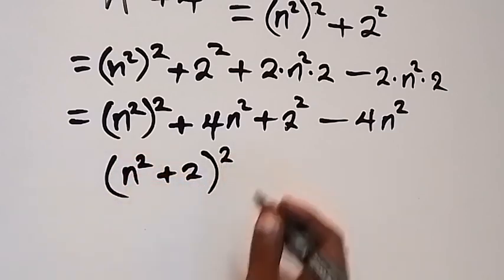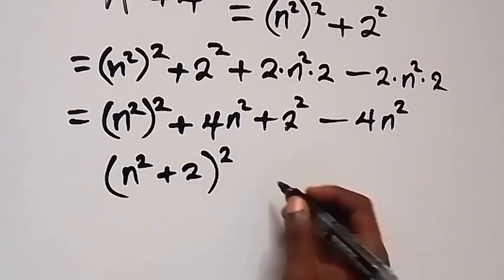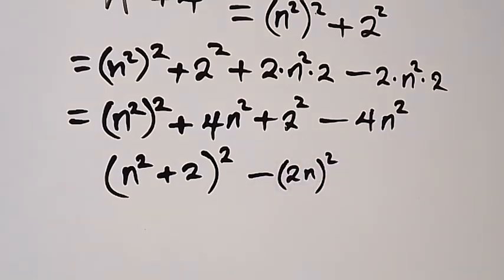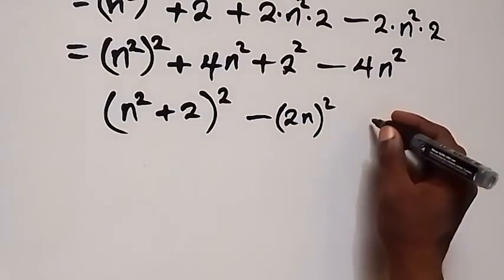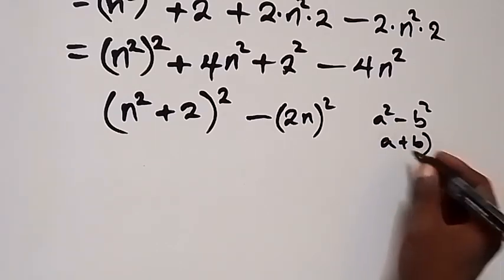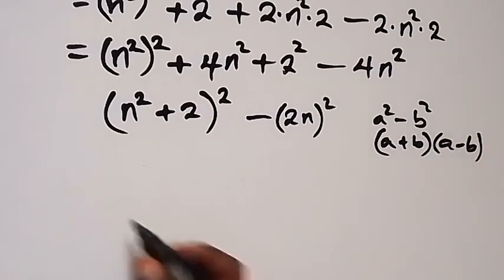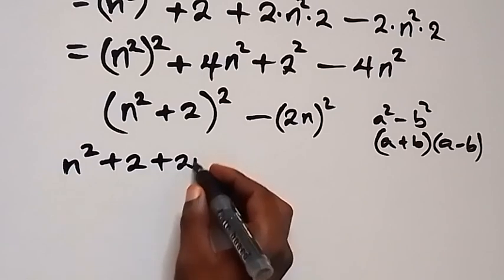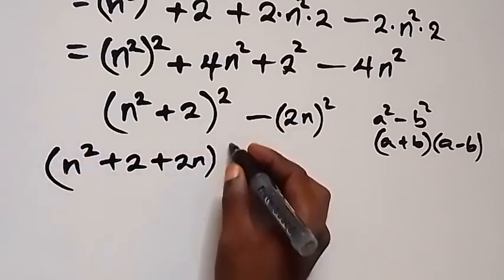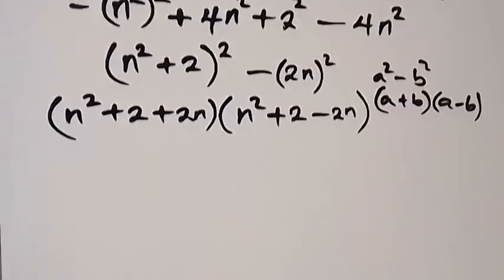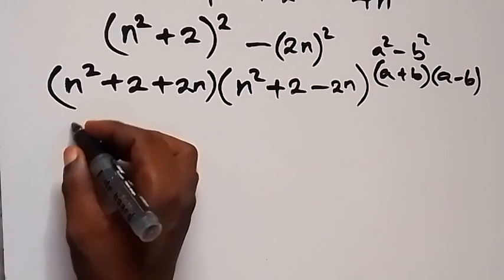The expansion gives us 4n² in the form of a difference of two squares. Recall that a² minus b² equals (a + b)(a − b). Writing our expression in that format, we have (n² + 2 + 2n) multiplied by (n² + 2 − 2n).